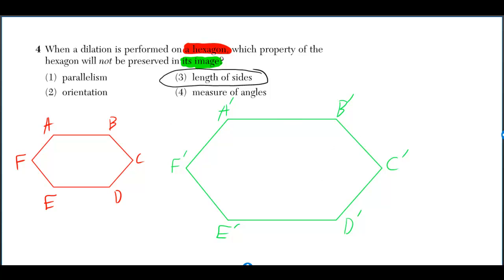Which means all these other things do get preserved. The measure of the angles stay the same. If they have the same shape, then they're going to have the same angles.